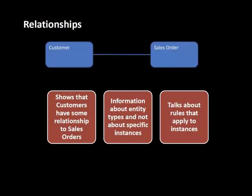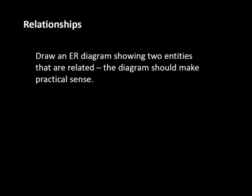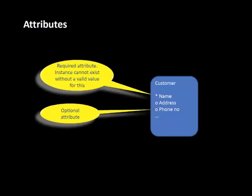We saw this diagram, and we looked at the entity relationship diagram versus the instances at the bottom. The instance diagram tells you specifically which instance is connected to which instance. The ER diagram is simply saying that at a general level, customers may be connected to sales orders. Then we looked at the notion of attributes of an entity type.